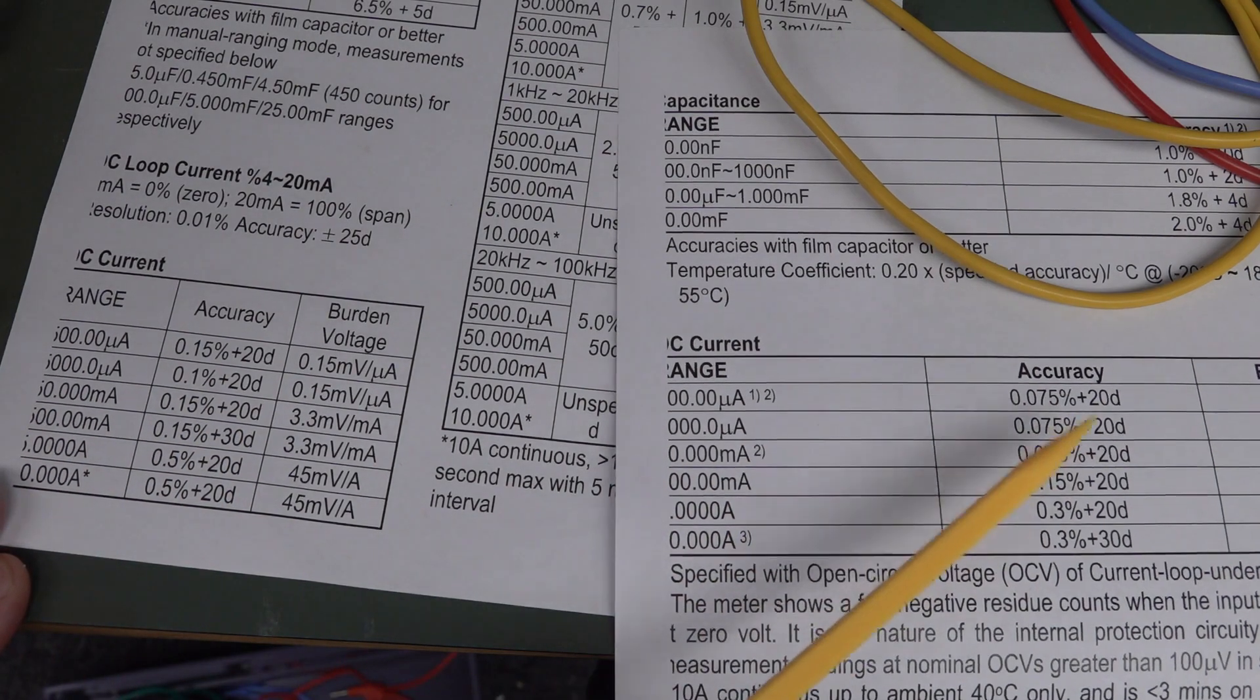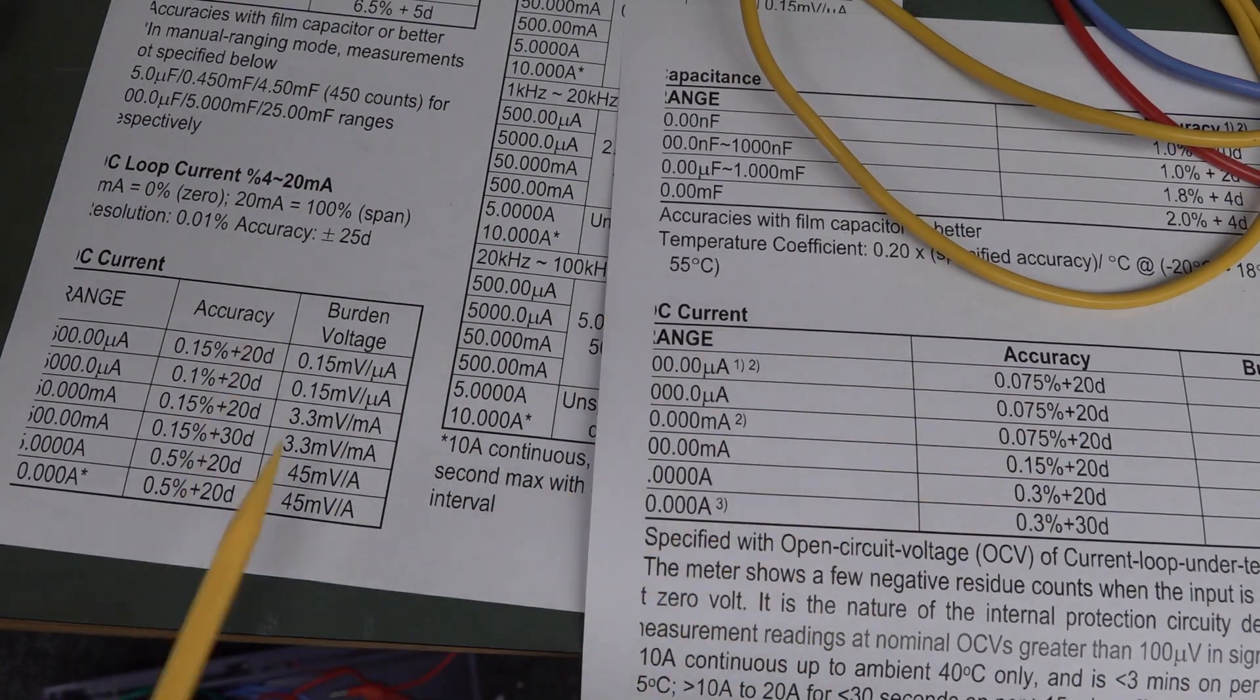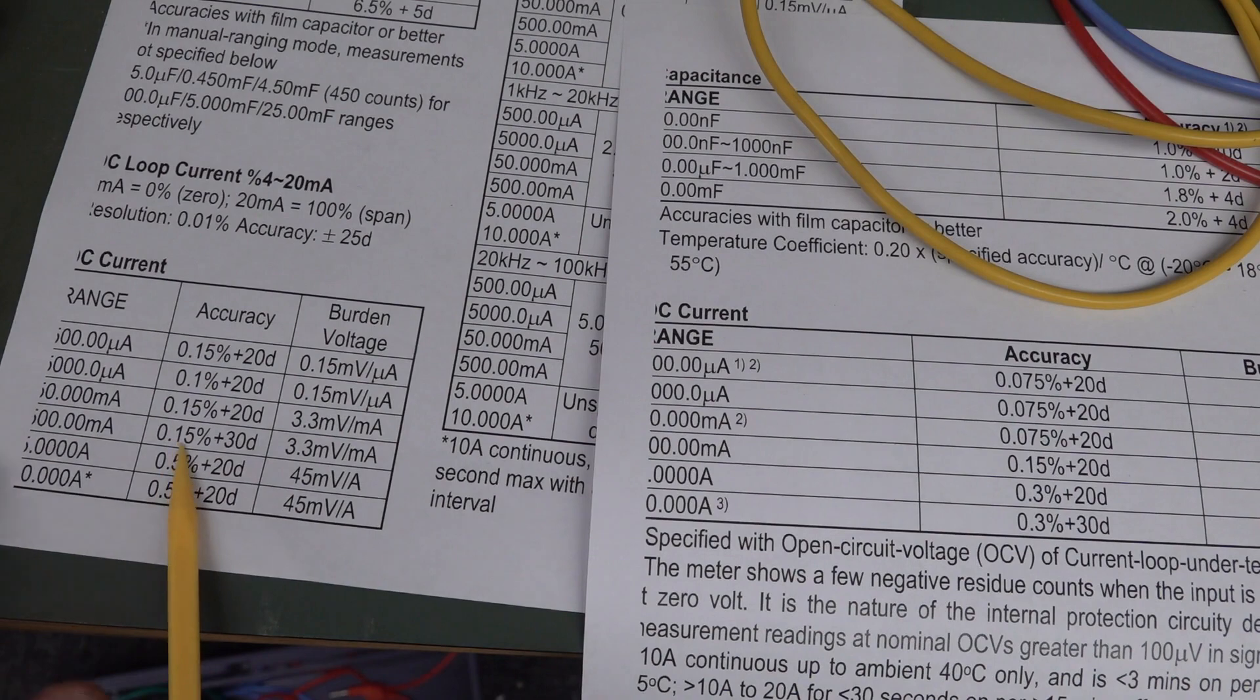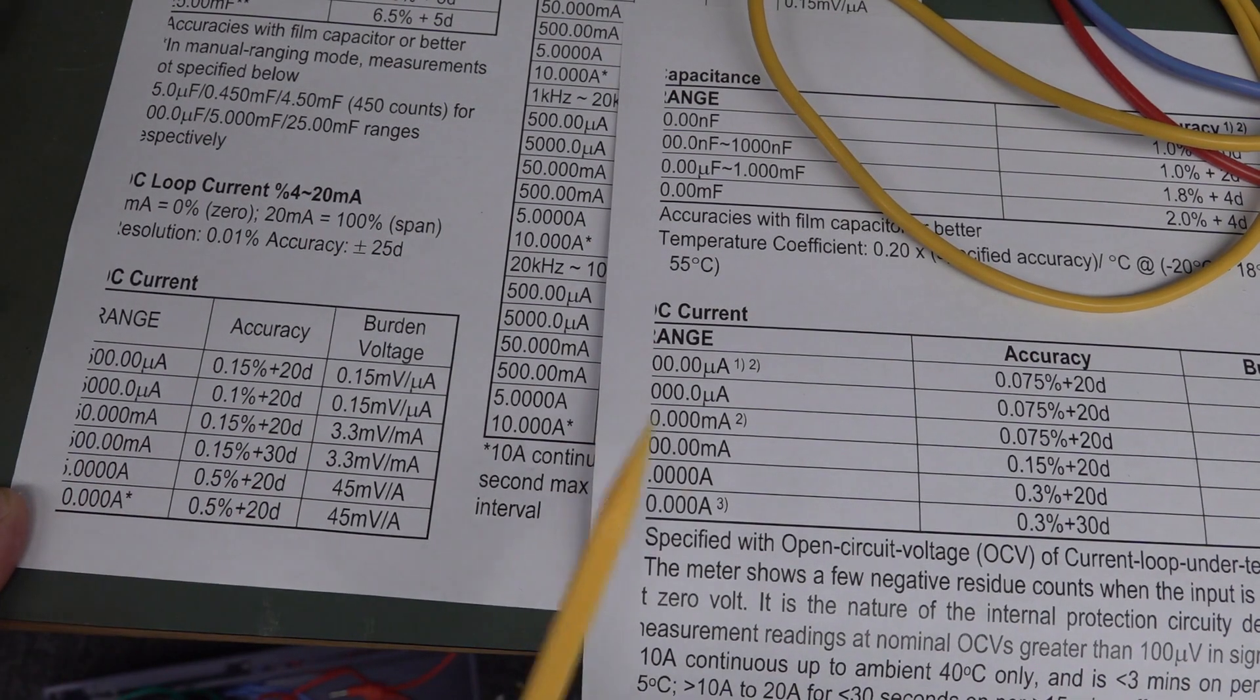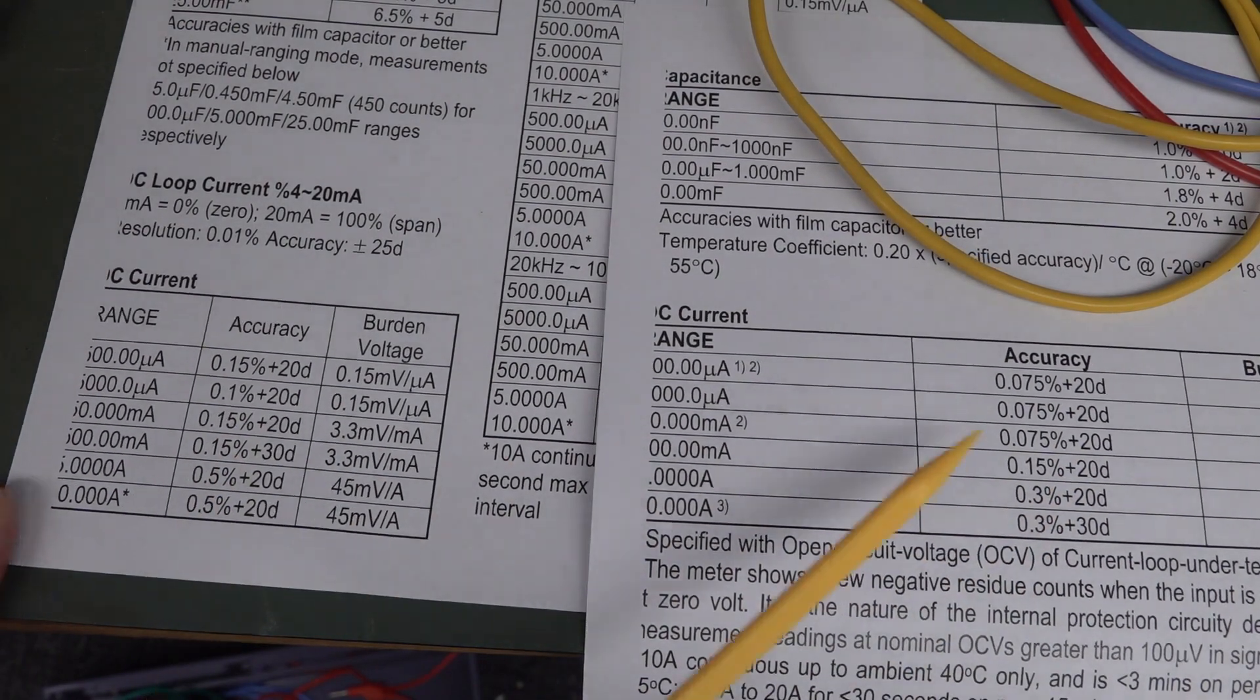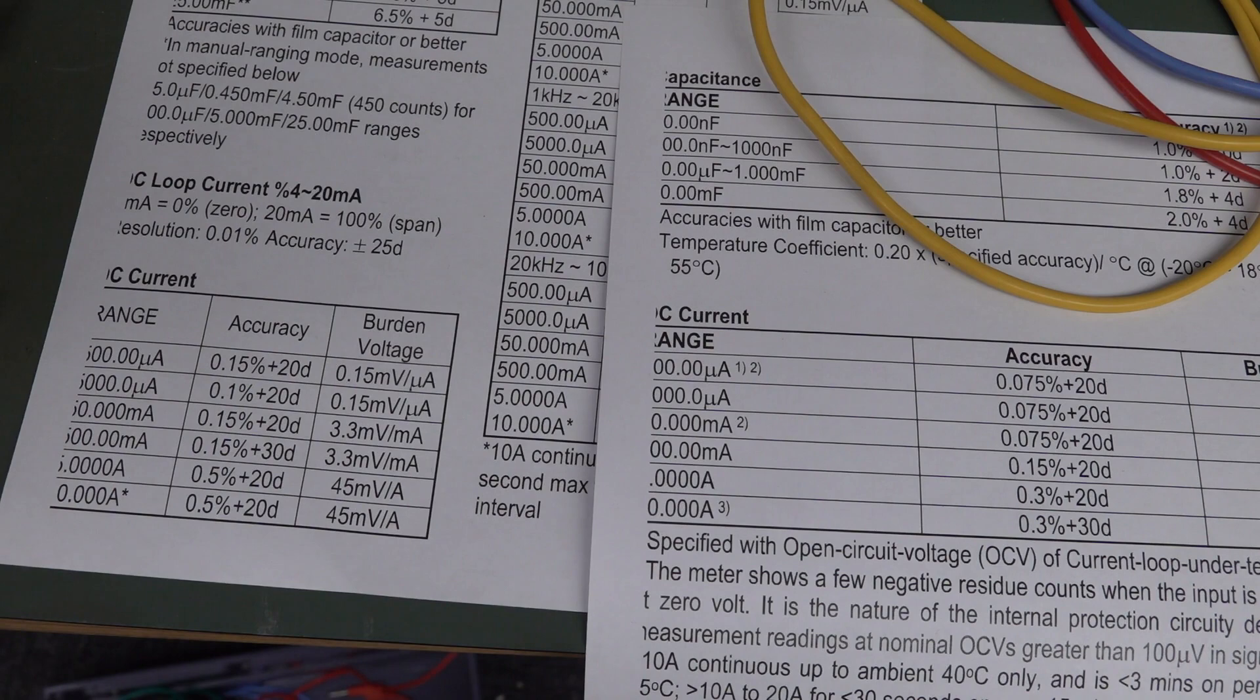So really, believe it or not, the cheaper BM786 is way better on DC current accuracy. They've all got the plus 20 digits here. In fact, the 869 has plus 30 digits on the 600 milliamp range, whereas the 600 milliamp range on the 786 is plus 20 digits with the same spec. So they've tightened the 780 series up on DC current.